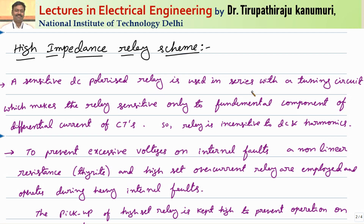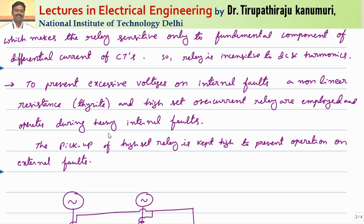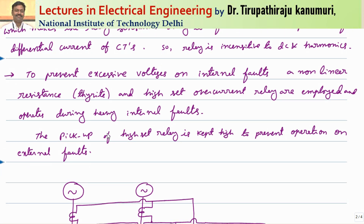The high impedance relay is connected in series with a tuning circuit. This tuning circuit will only allow the fundamental component and does not allow higher order harmonics. Particularly whenever a through fault causes CT saturation, higher order DC and harmonic components are produced. Those components are not allowed to pass through your relay — meaning it will only sense the case of internal faults and will not sense external faults or through faults.